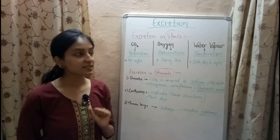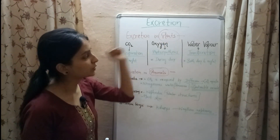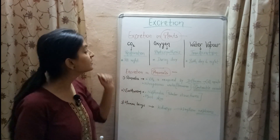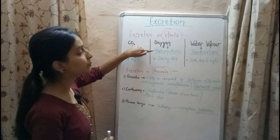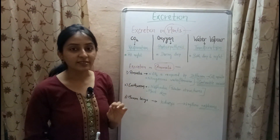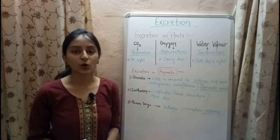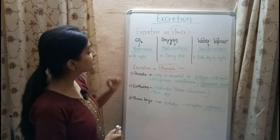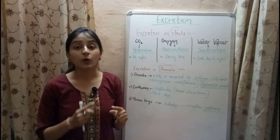Let's start with excretion in plants. The main excretory products in plants are carbon dioxide, oxygen, and water vapor. Carbon dioxide is excreted by plants at night by the process of respiration. Oxygen is excreted by the process of photosynthesis, which takes place during the daytime. Water vapor is excreted by the process called transpiration, which occurs all the time — during day as well as at night.